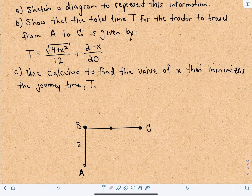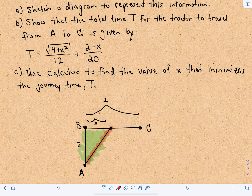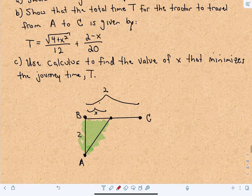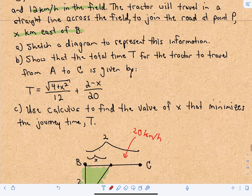The whole length from B to C is two kilometers, and the part from B to P is X kilometers. The farmer is traveling across the field — I'll even shade it in. So this is the field he's working in. He's driving the tractor along the field, eventually syncing up with the road, and then just keeps going. Along the field he's traveling at 12 kilometers an hour, and on the road the entire road he's traveling at 20 kilometers an hour.